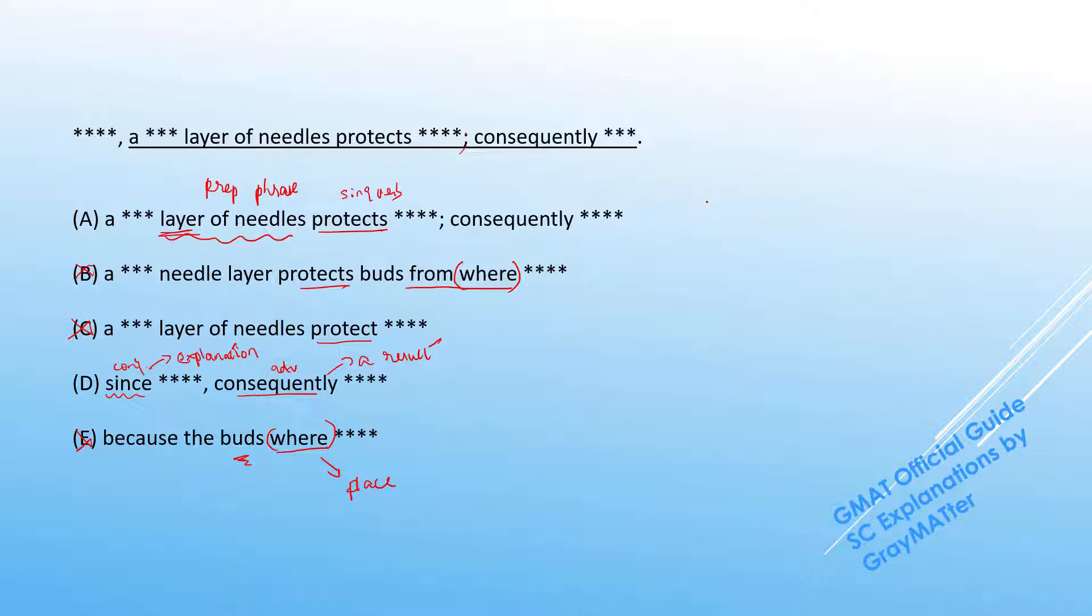It will be just similar to saying since he was sick, consequently he didn't come to work. Isn't the sentence more straightforward when we say since he was sick he didn't come to work? So the consequently, which indicates as a result, is causing a redundancy.